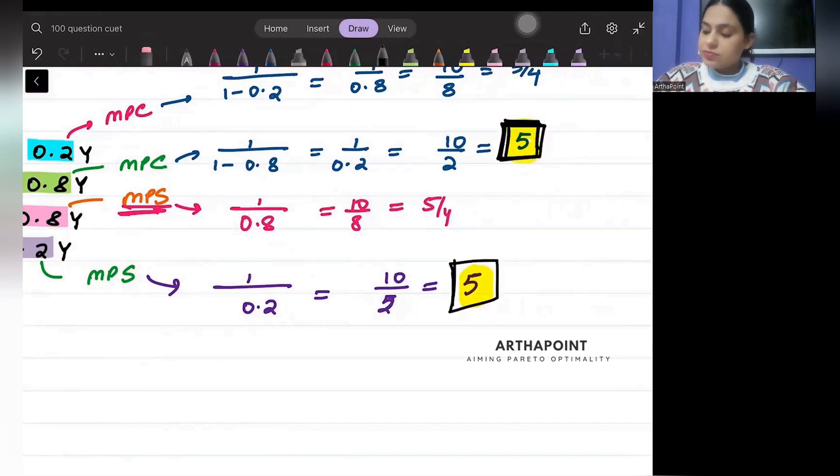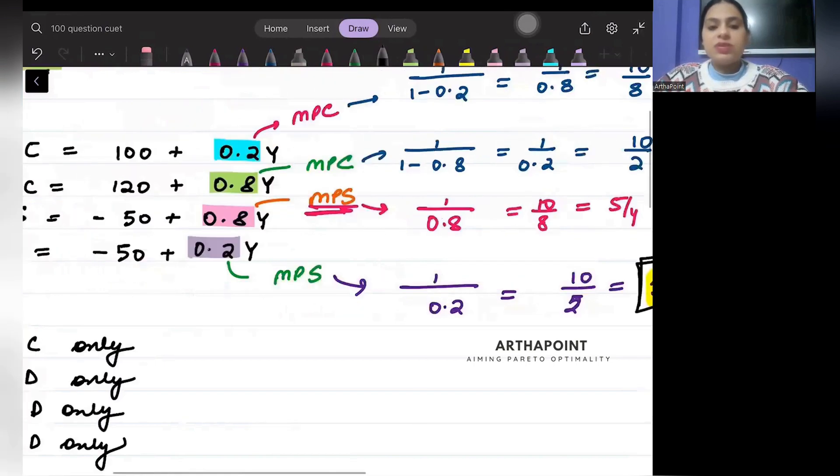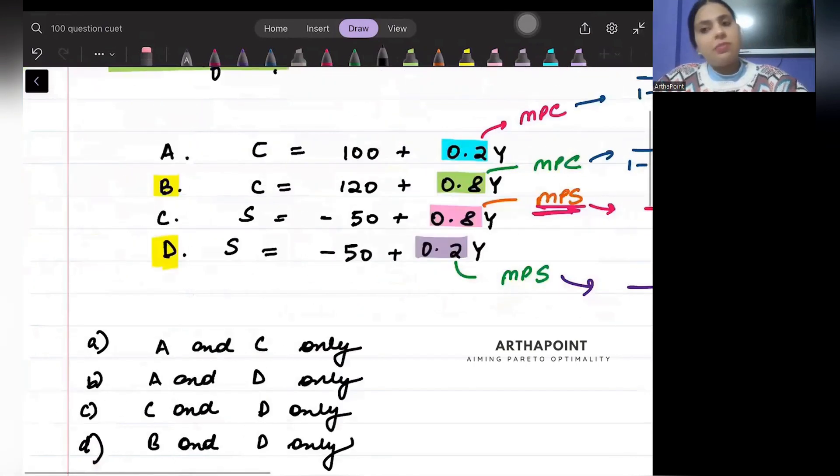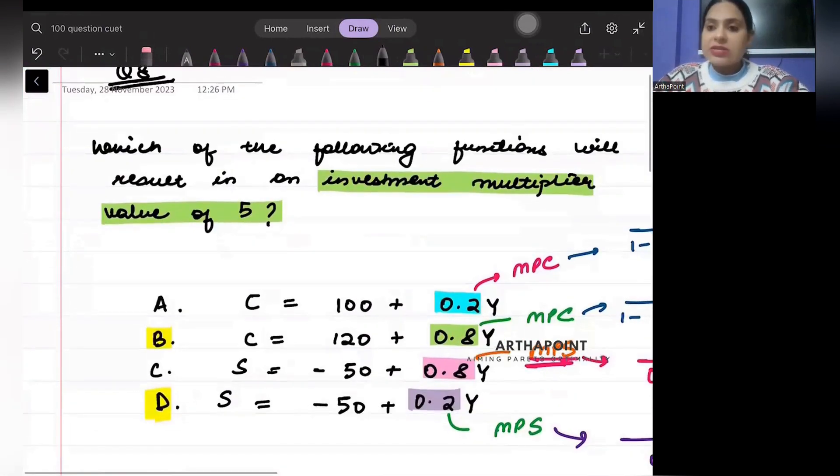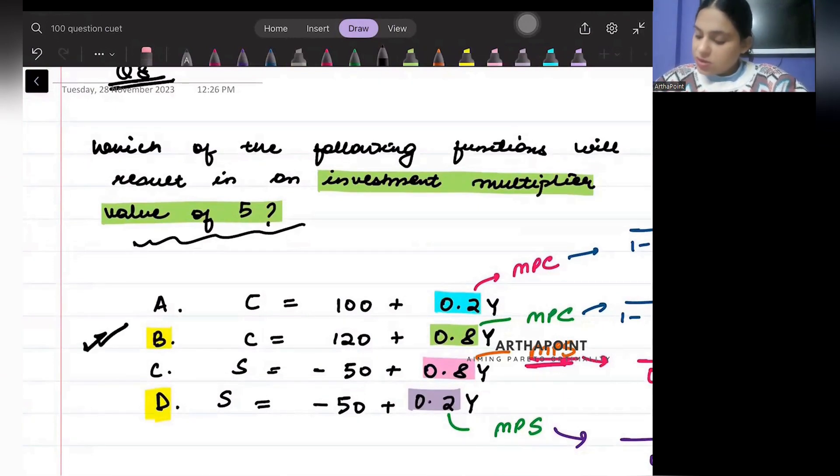So this will be the value of my multiplier in the above cases. So the question is where is the multiplier 5? So we have found out that it is 5 here and here. Okay, thank you.